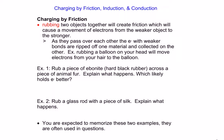When we rub two objects together, the electrons from the weaker substance — whatever has weaker bonds — will move to the substance that has a stronger bond. Using balloons as an example: when we rub a rubber balloon on our hair, our hair gives up electrons to the rubber balloon. That gives the balloon a negative charge and leaves our hair with a positive charge.